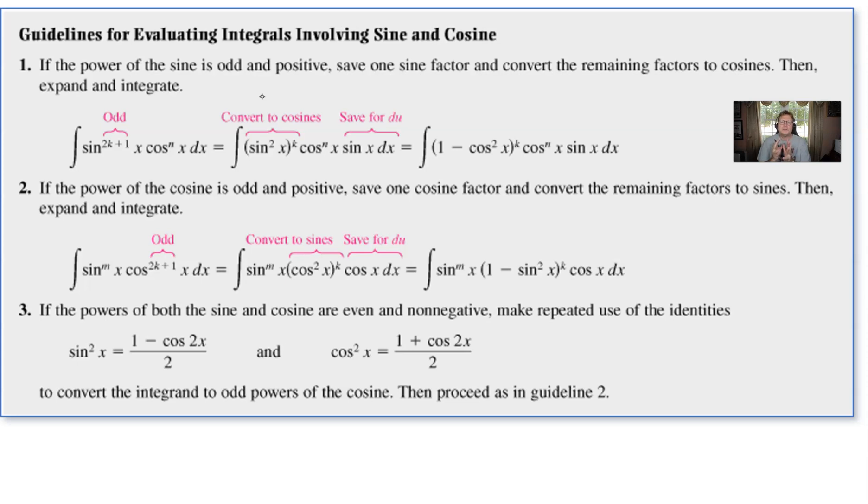Whichever one of those you see you have to lock into the fact that odd is evil you don't want an odd exponent they're very difficult to work with and so what you'll end up doing is what we call saving a sine factor or saving a cosine factor I'll show you exactly what that means here in just a little bit and then we convert the remaining factors in terms of the other trig word save a sine factor and convert everything else to cosine save a cosine factor and convert everything else to sine.